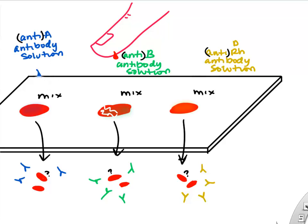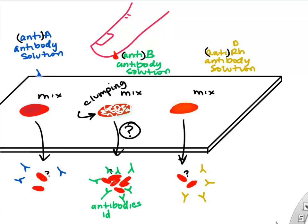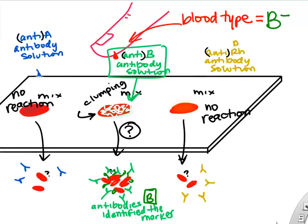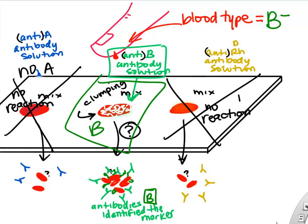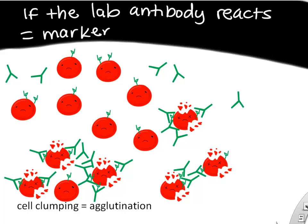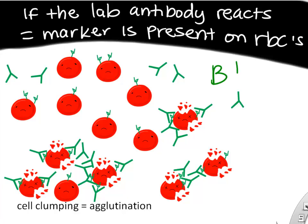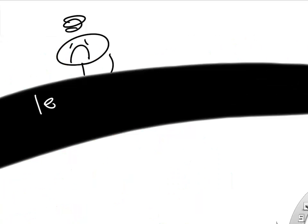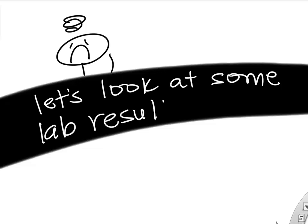In this example, the second drop of blood starts to clump up. The clumping of the blood suggests a reaction between the antibodies and markers on the red blood cells. Since the second drop received the B antibodies, it means those antibodies are detecting a marker, and since they only bind to the B marker, this blood sample has B markers on its surface. The A antibodies and RH antibodies did not react, suggesting this person only has the B markers — so we call their blood type B negative. We call this clumping agglutination. In lab, the antibodies are simply being used to detect the markers on your red blood cells.